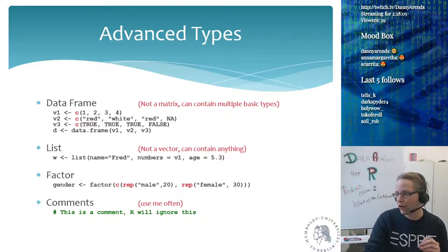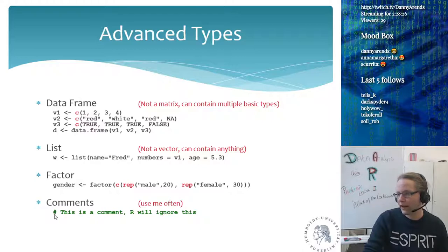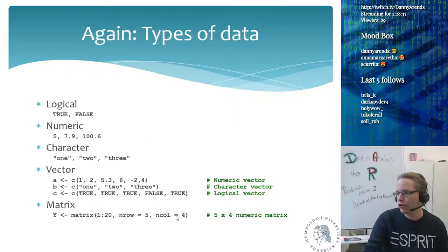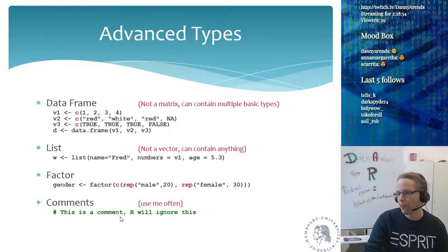A factor is a different type so that R understands it has to treat a factor differently than a numerical value or a character value in statistics. R also has comments — always use comments to describe what you are doing when writing a script. Comments start with a hashtag, and everything after the hashtag is ignored. This is your free space to write, and R will still execute the code around it.